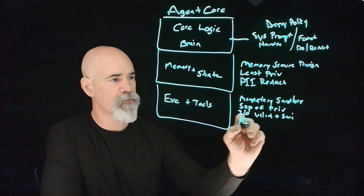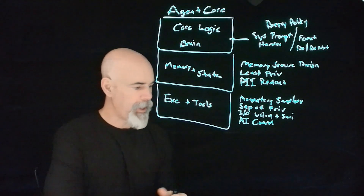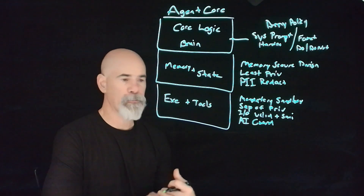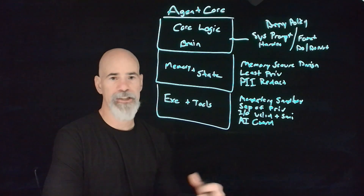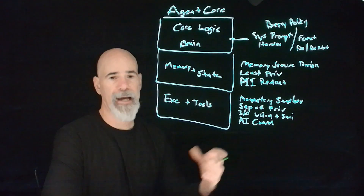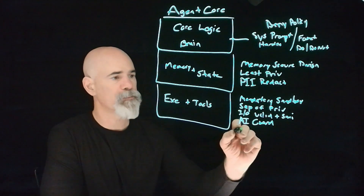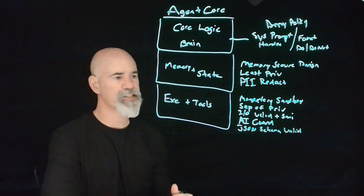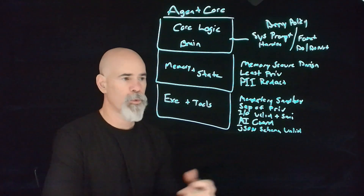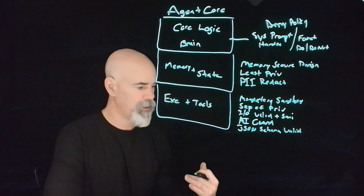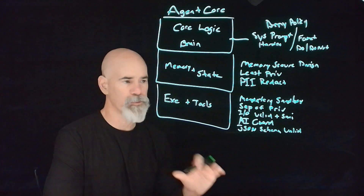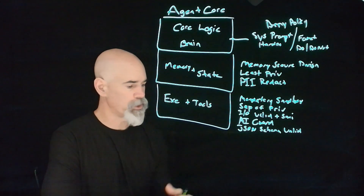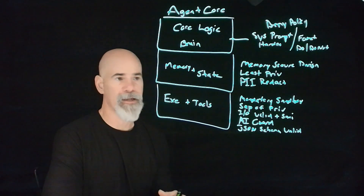We also want to make sure that we have AI guardrails. These AI guardrails implement external guardrail models to inspect and filter both inputs and outputs for policy violations. We can actually layer in additional agents or LLMs to validate that the agent is acting within the appropriate guardrails. And lastly, a JSON schema validator — though this also applies to XML and markdown. We want to enforce strict data formats for any structured type of data, for tool input and output, to prevent any kind of malformed data from causing unintended behavior.